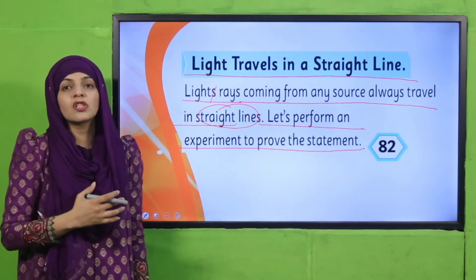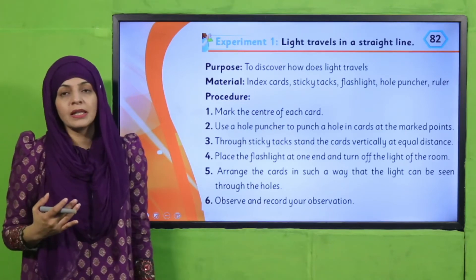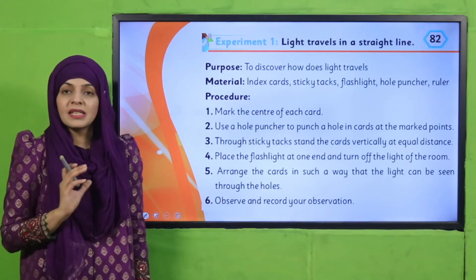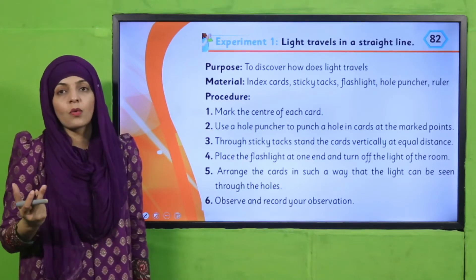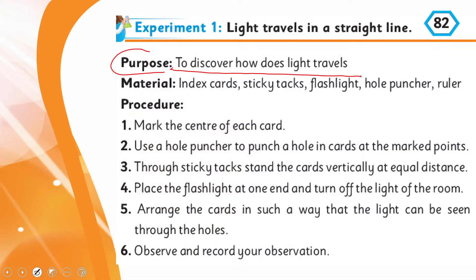Experiment number one on page number 82: Light travels in a straight line. Let's see the instructions and required materials. Purpose: to discover how does light travel. Material required is index cards, sticky tags, flashlight, hole puncher, ruler, etc.